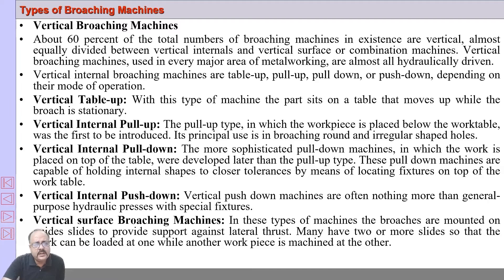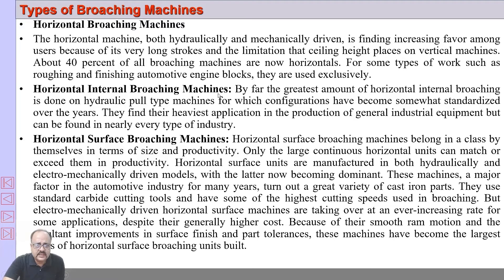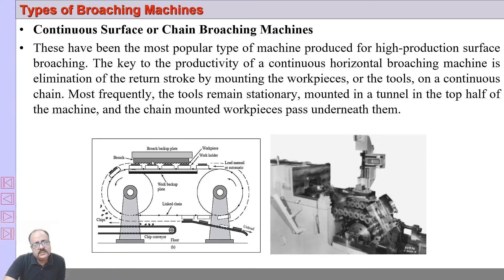We also have horizontal broaching machines — horizontal internal and horizontal surface broaching machines, which can be push or pull type. In continuous surface or chain broaching, the broach is held stationary by a backup plate with no need for tool return. Multiple workpieces are moved by a chain conveyor system at a specific speed. As each workpiece passes the stationary broach tool, the work is finished, then unloaded, and chips are carried away by conveyor.